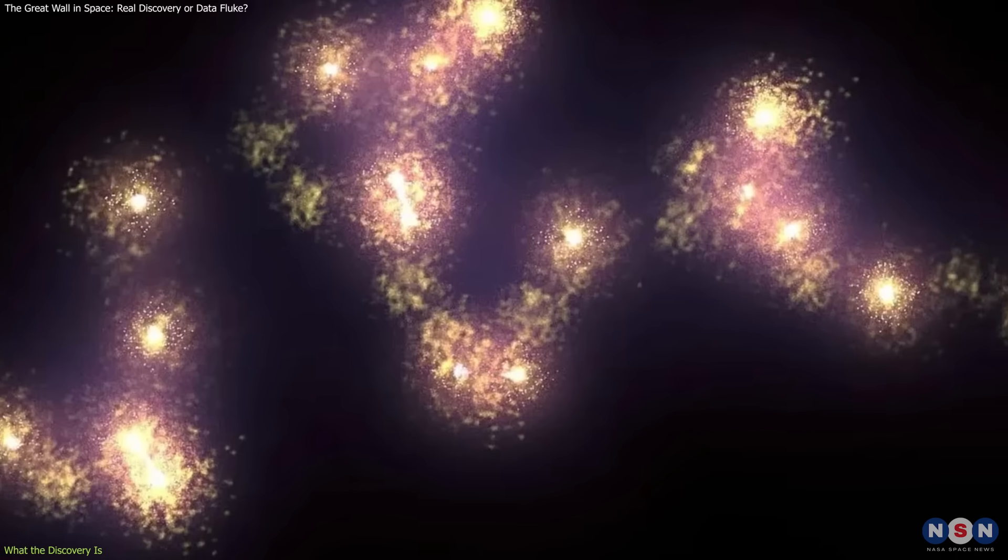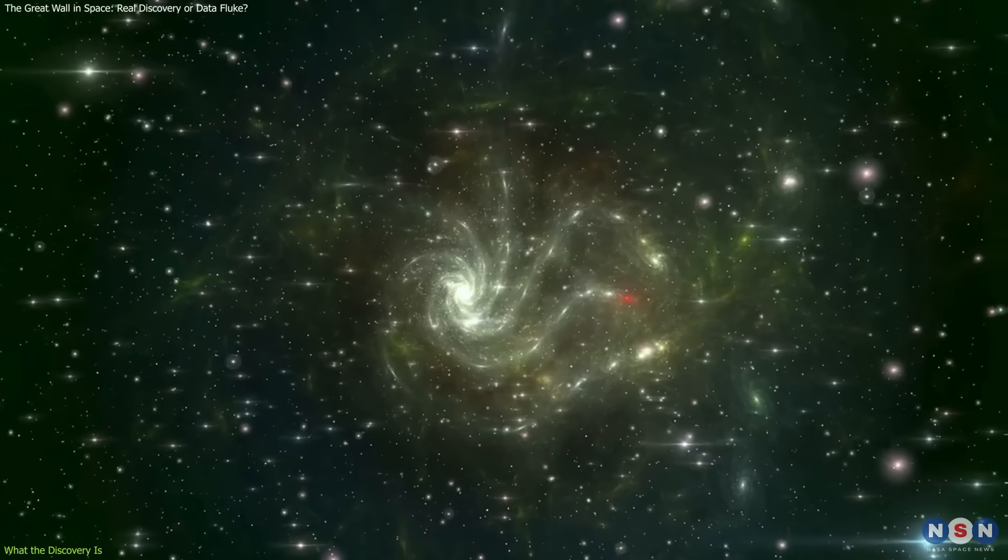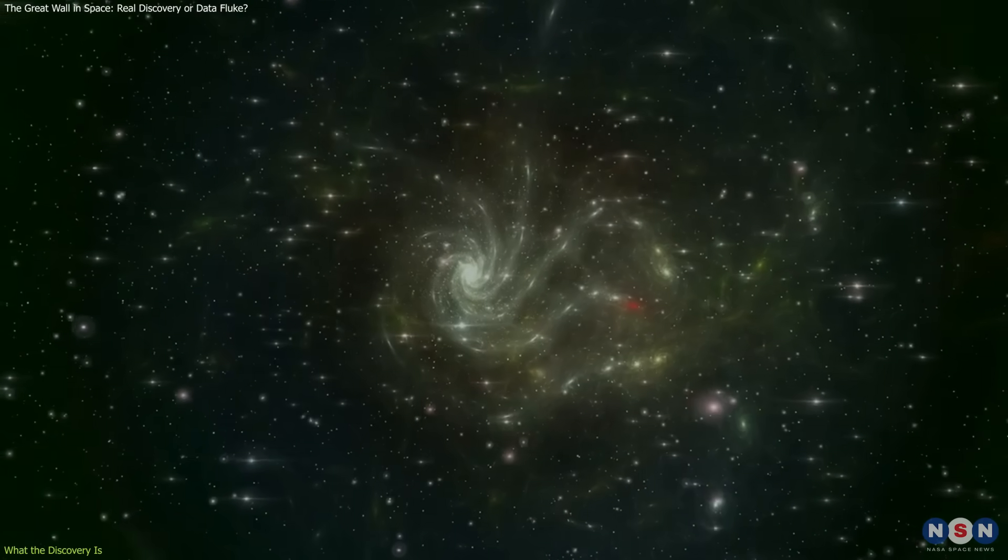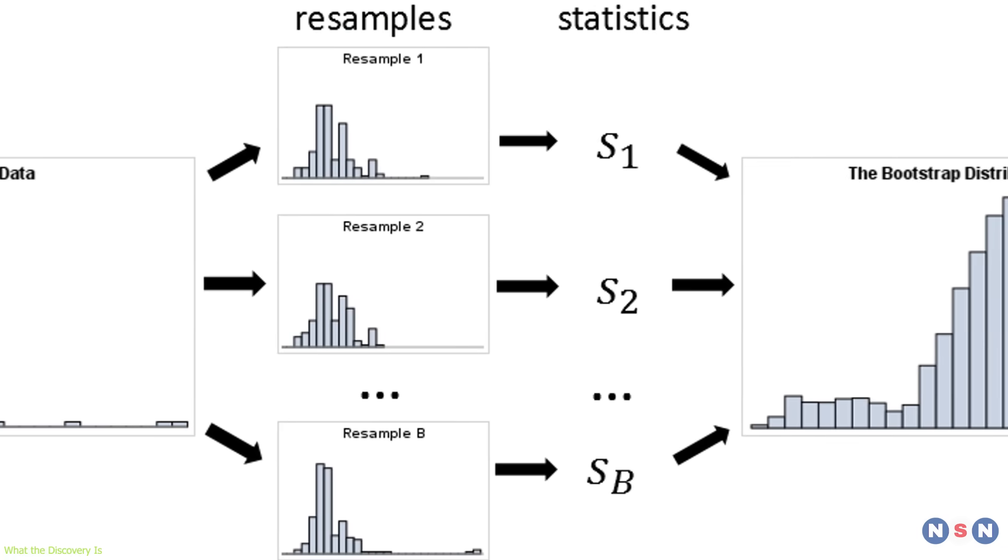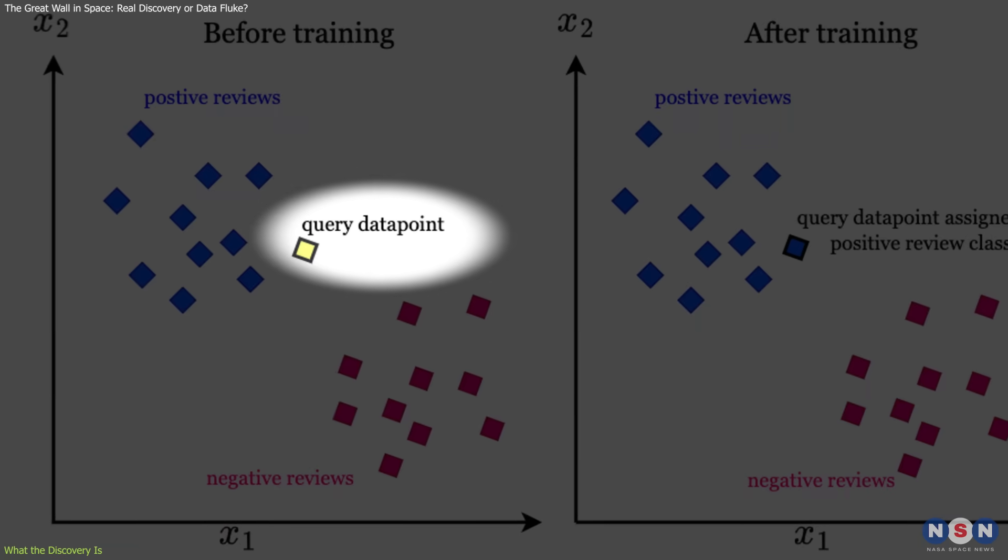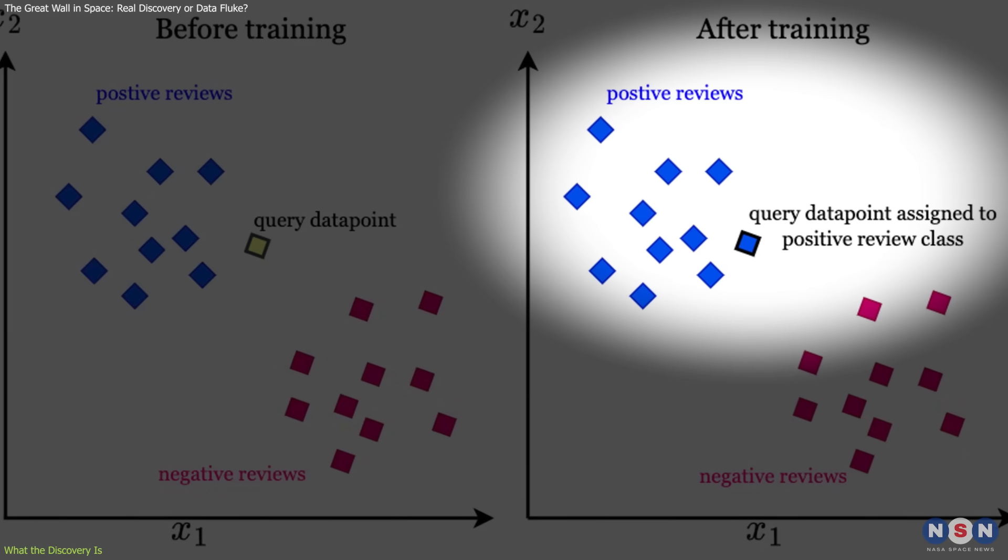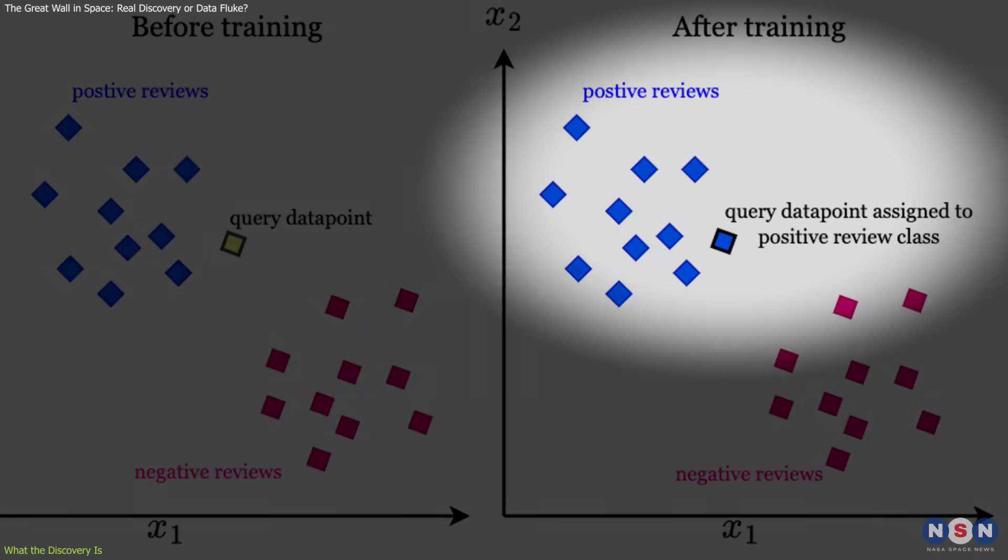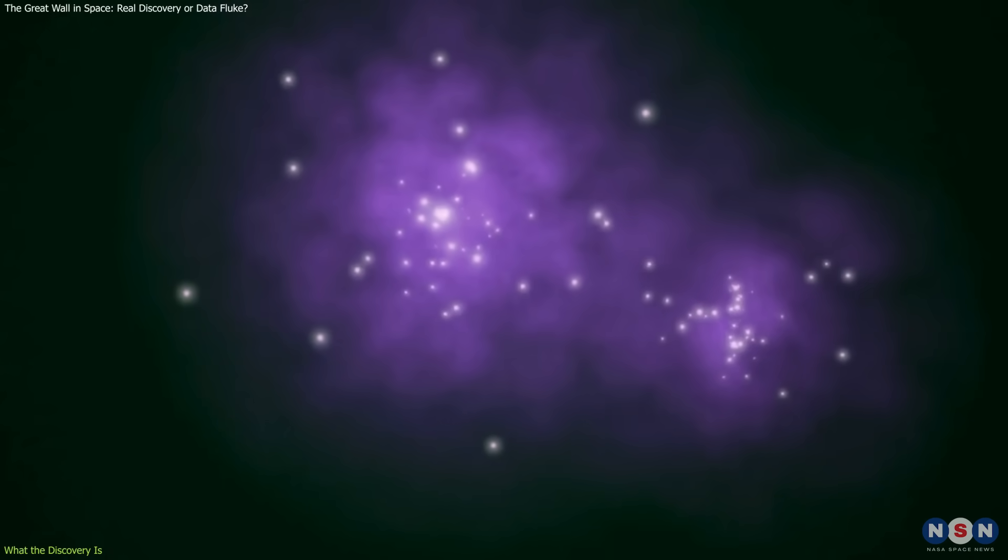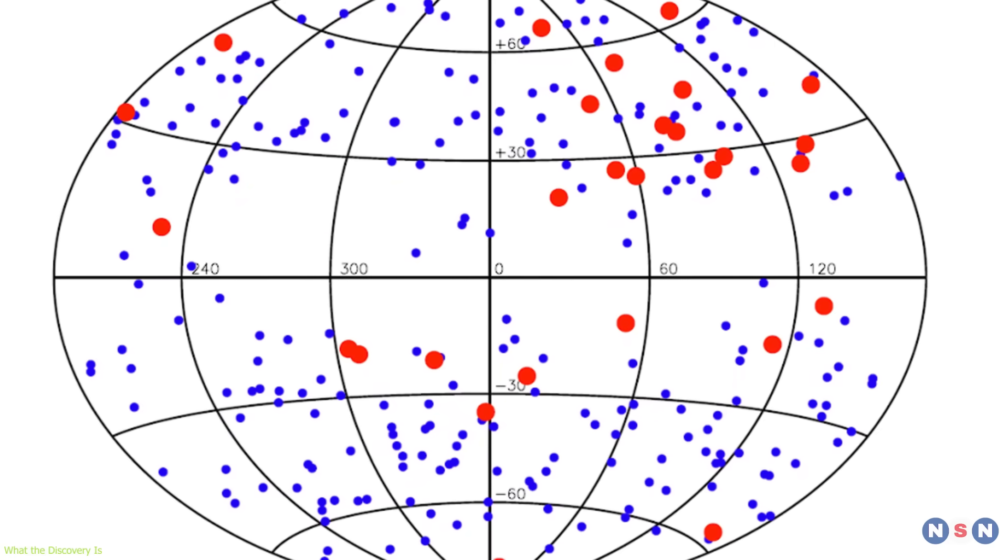To test whether this apparent clustering was real or a statistical fluke, researchers used several validation methods, including nearest neighbor and bootstrap resampling analyses. These techniques evaluate whether a group of data points is unusually concentrated, compared to what you'd expect in a random distribution. The results pointed to a statistically significant over-density of GRBs in that region, one that seems unlikely to occur by chance alone.